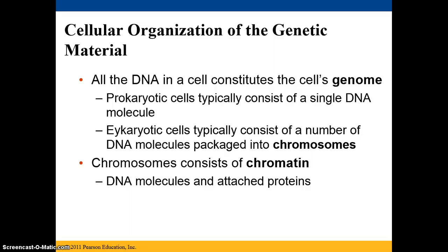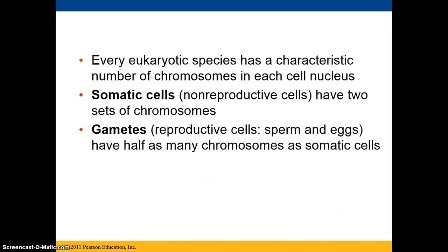All of the DNA within the cell constitutes its genome. Prokaryotic cells usually have one single DNA molecule, sometimes circular, which we have referred to as a plasmid. Eukaryotic cells typically consist of a number of DNA molecules packaged into chromosomes, which consist of chromatin — DNA molecules and the attached proteins. Every eukaryotic species has a characteristic number of chromosomes in each cell in the nucleus, so a different number of chromosomes means we're looking at a different species.